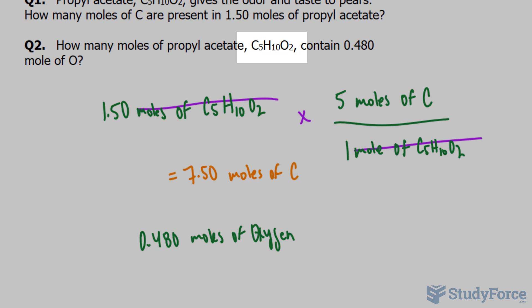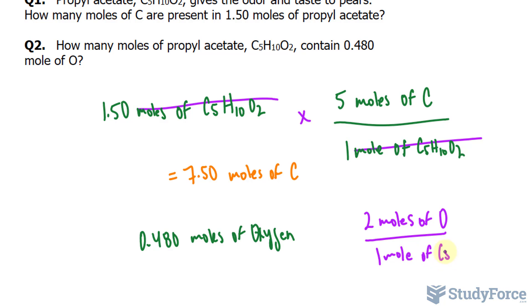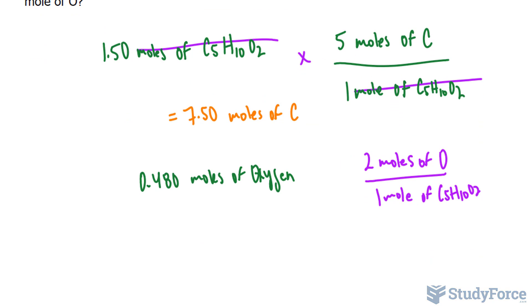If you look at the compound itself, there are 2 oxygen atoms in 1 molecule of this compound. So I'll write down 2 moles of oxygen per every 1 mole of C5H10O2, very much the same way I wrote the previous ratio. Except when we multiply these two numbers together, I want to make sure that the unit I want to cancel is at the bottom of this fraction. Right now it's at the top, so I'll place 1 mole of C5H10O2 on top and 2 moles of oxygen on the bottom.